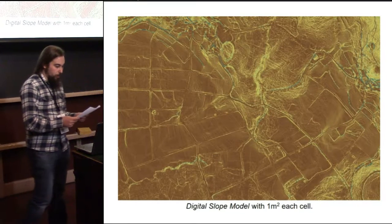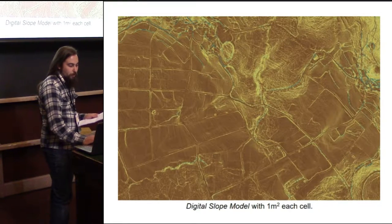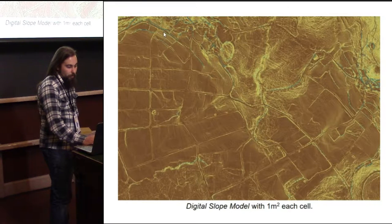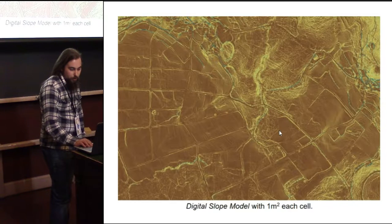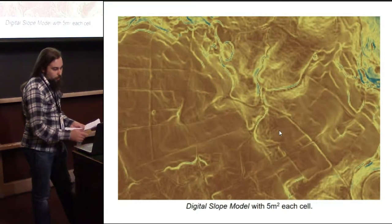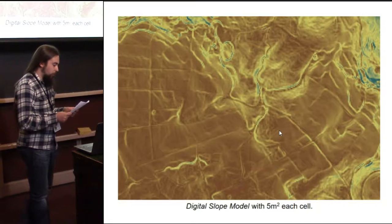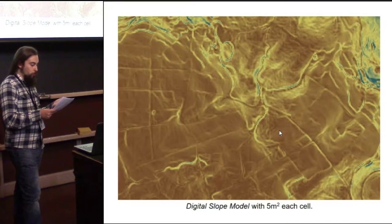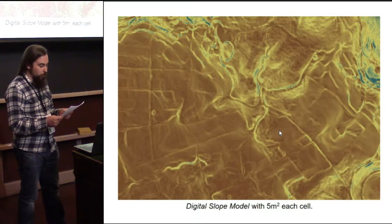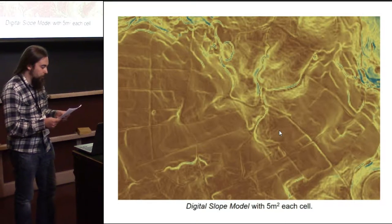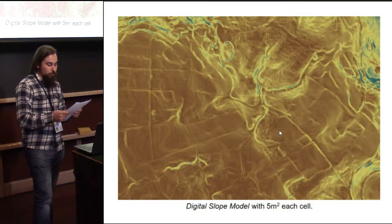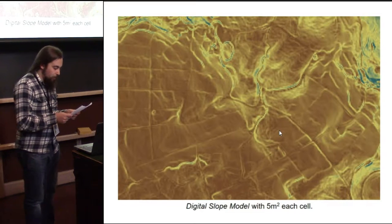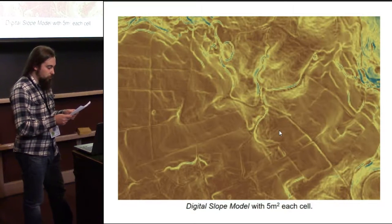The model of one meter, as you can see, shows all the alterations from the area. With the model of five meters, we erase a good part of those elements that may condition mobility, such as barriers like buildings and walls, and those that favor mobility like roads and highways. But still, traces of roads or buildings don't disappear completely.